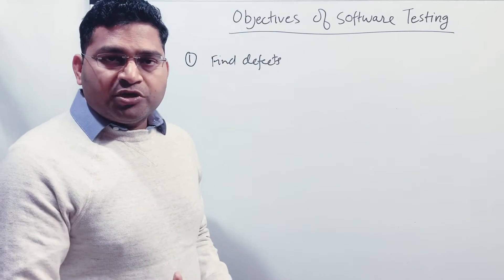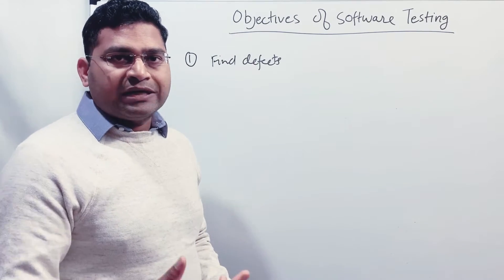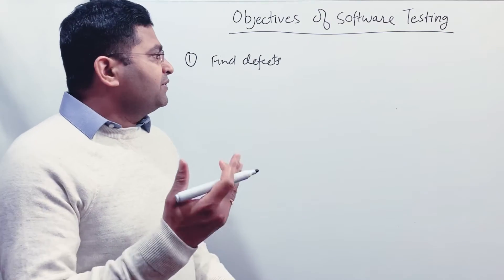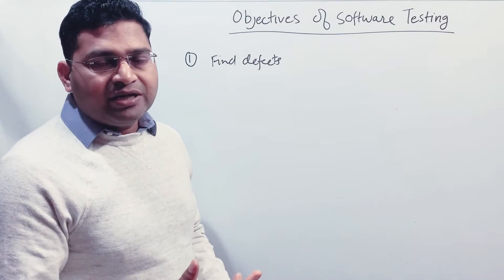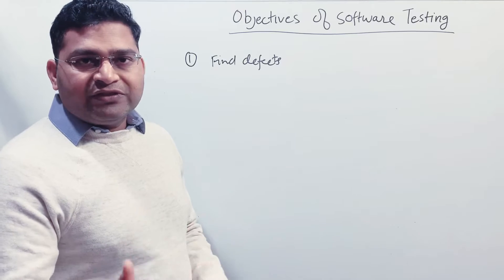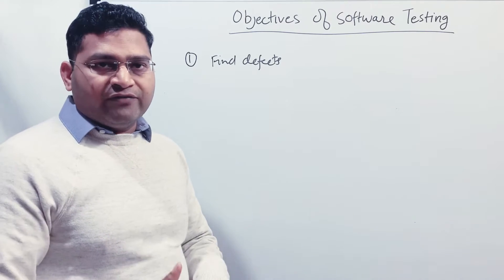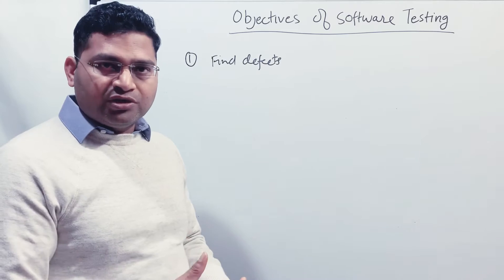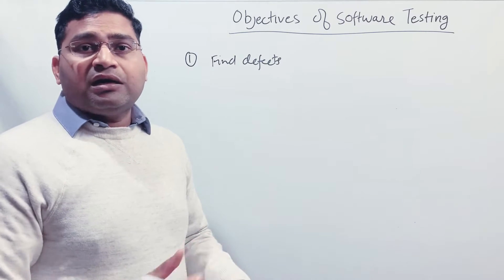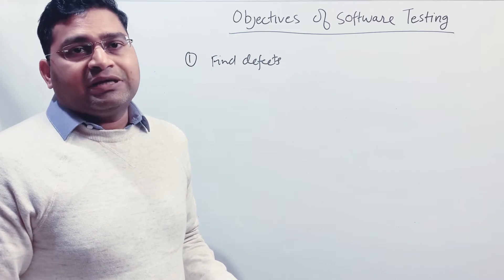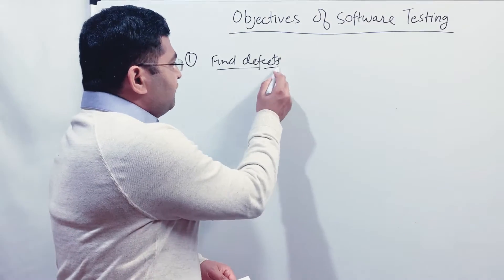For example, in an e-commerce website you are testing — you launch the website, you are adding an item into the cart, and the item is getting added. If the item is not getting added, that's a defect. You found the defect: when you add the item into the cart, the item is not getting added. So that's finding the defect.